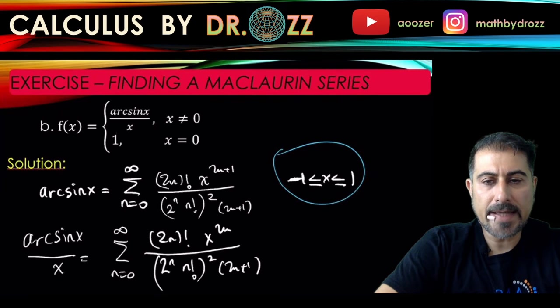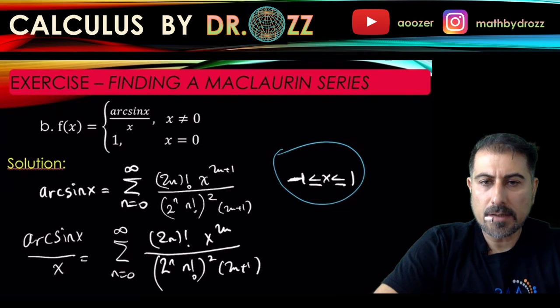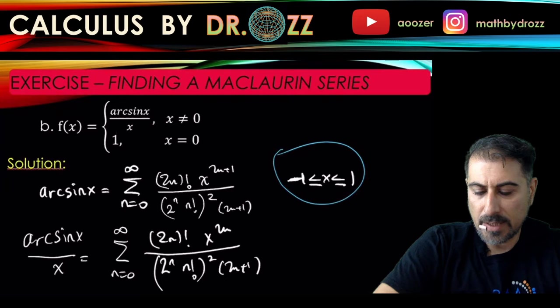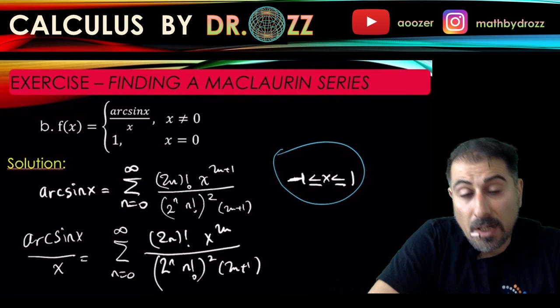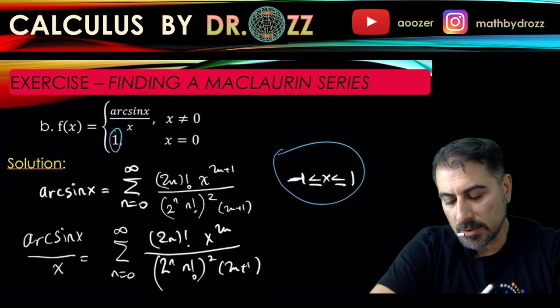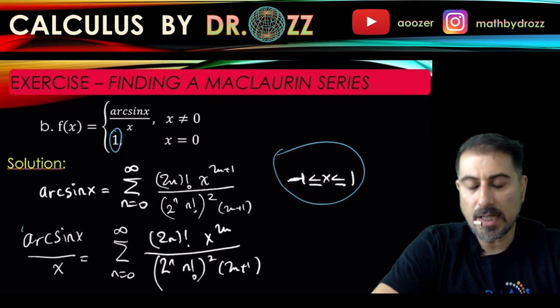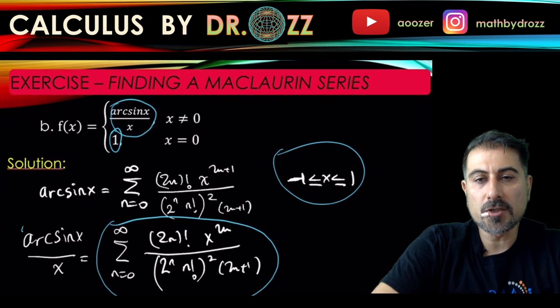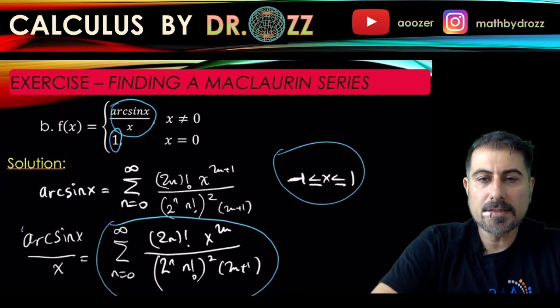This looks good. For the other piece, we don't need to have the power series representation because it's just a constant, it's a polynomial already. All you're going to do is just copy this power series down here. That would be the power series representation of the piecewise function.